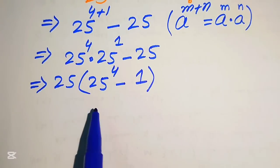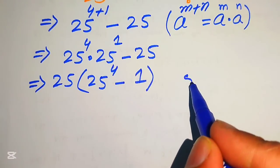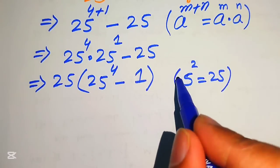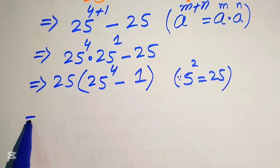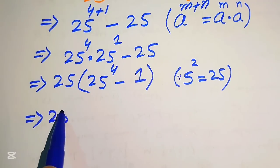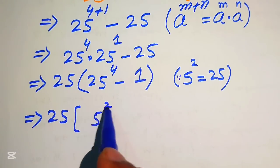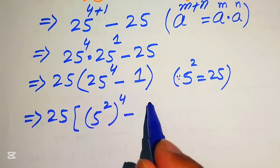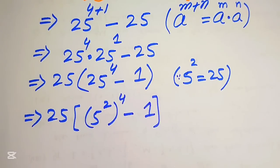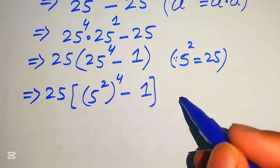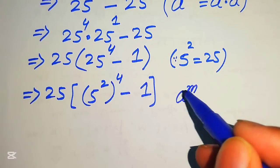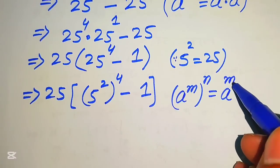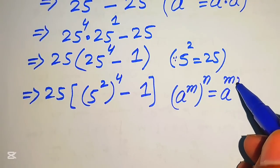In the next step, we know that 5 squared equals 25, so we replace 25 with 5 squared. It is written as 5 squared with a whole exponent of 4, minus 1. We then apply the exponent law: a to the power of m to the power of n equals a to the power of m multiplied by n.